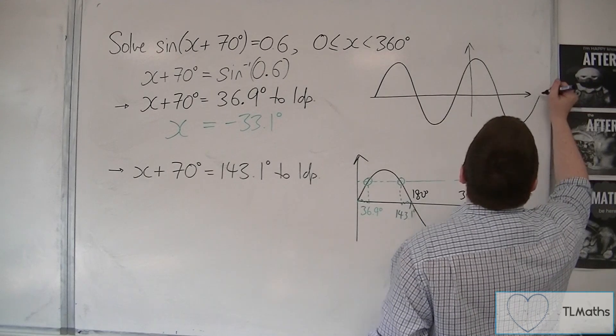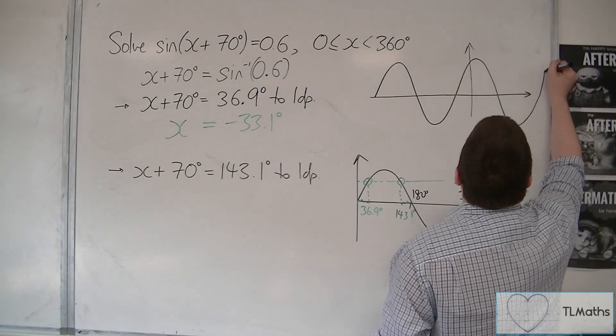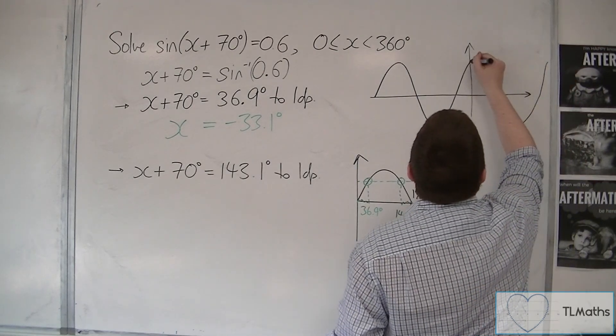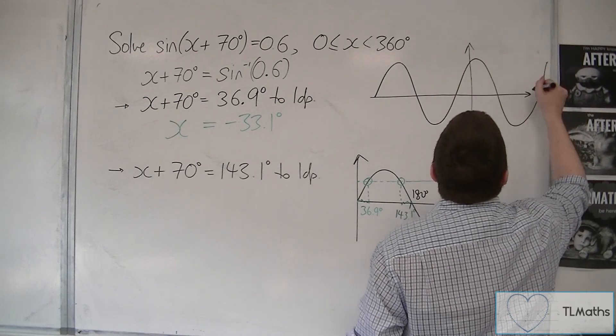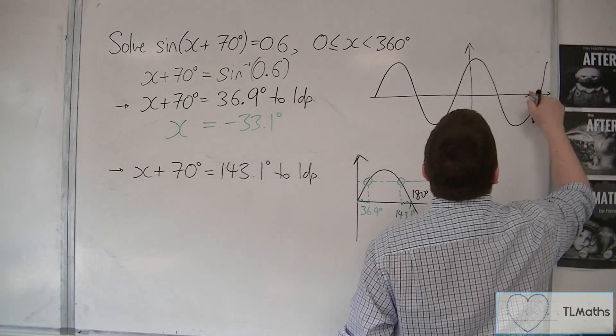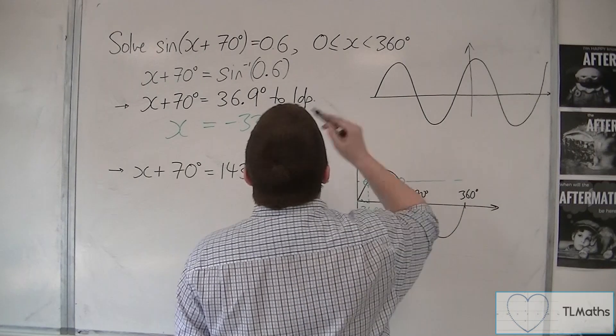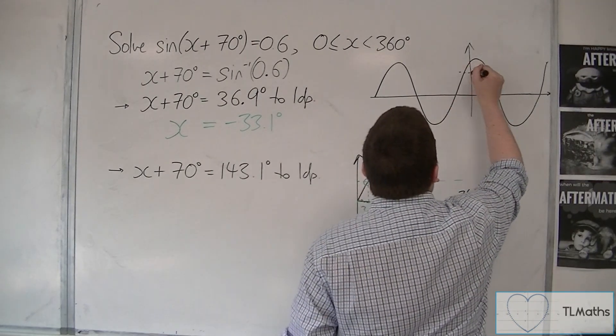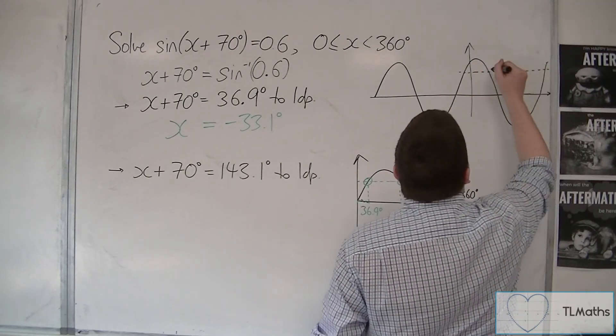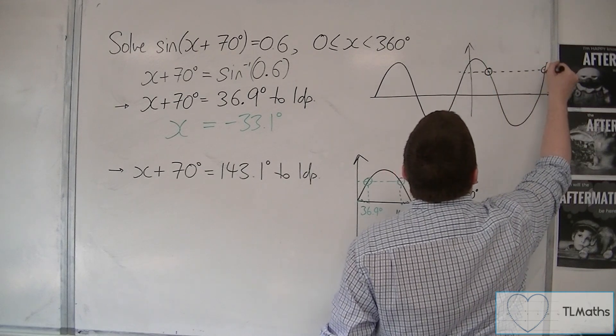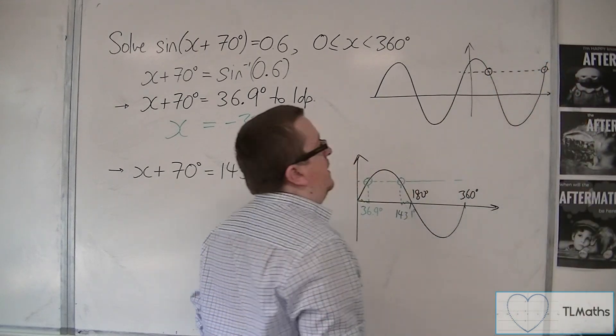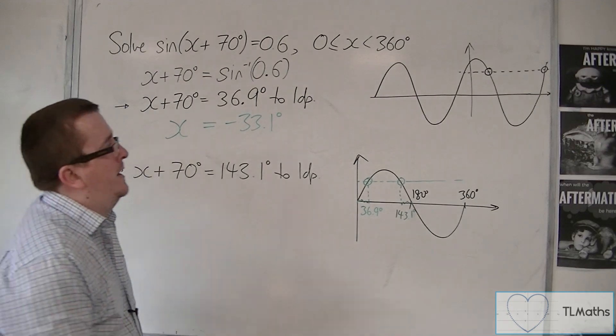So, between 0 and 360, actually, this curve is going to come up, and that point will be the same height as that one. So, when I do the 0.6, it's going to cut the curve there and there, between the 0 and 360.